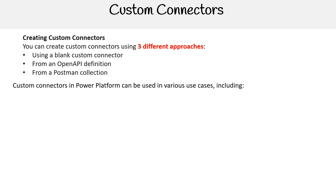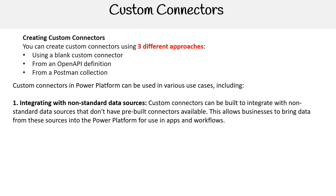Custom connectors in Power Platform can be used in various use cases, including integrating with non-standard data sources. Custom connectors can be built to integrate with non-standard data sources that don't have pre-built connectors available. This allows businesses to bring data from these sources into the Power Platform for use in apps and workflows.